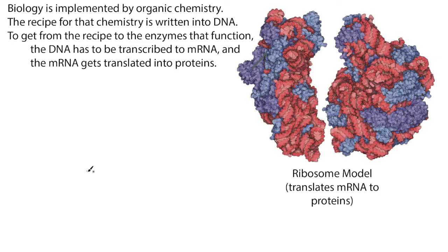Biology is implemented by organic chemistry and the molecules it uses are encoded into the organism's DNA. This molecule on the screen is a ribosome molecule, and each one of these little knobs represents an atom. It has thousands of atoms all aligned very closely to create a molecule that has a very specific function — one that catalyzes the translation of a messenger RNA into a protein. This is what makes the proteins that then make up the enzymes like the ribosome itself.